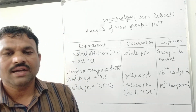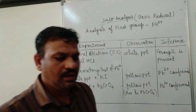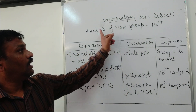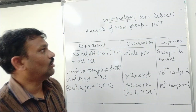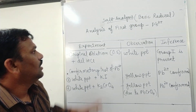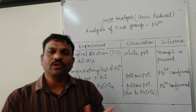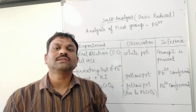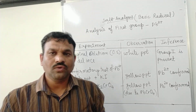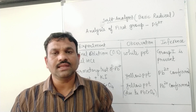Namaskar Saathiyo. In today's video, we will discuss the analysis of the first group in the salt analysis of basic radicals. In the first group of basic radicals, Pb2+ (lead) and silver ions are present. We will look at how to confirm the presence of lead in the given salt.